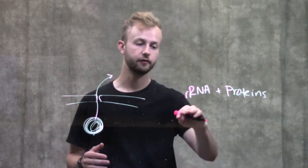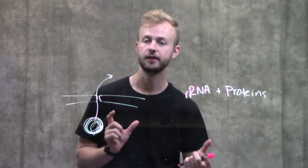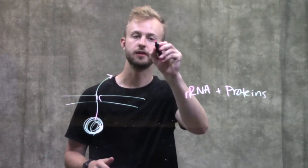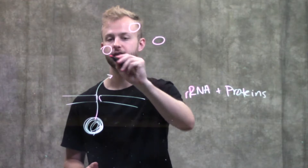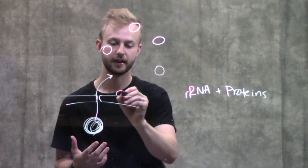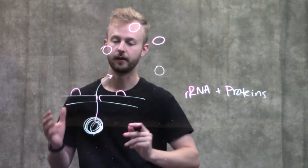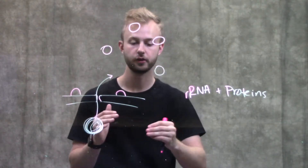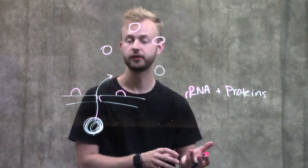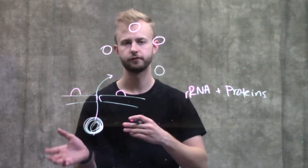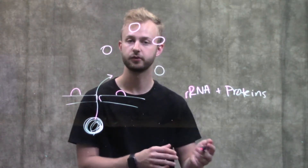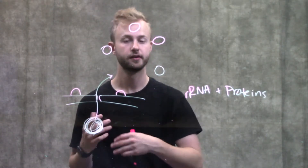Once you have a fully formed ribosome, it can be in two different spots within the cell. It can be a free ribosome, floating around in the cytoplasm, or it can be an attached ribosome, which attaches to either the surface of the nuclear envelope or to the endoplasmic reticulum — specifically the rough endoplasmic reticulum. The rough ER has ribosomes on its surface, whereas the smooth ER does not.